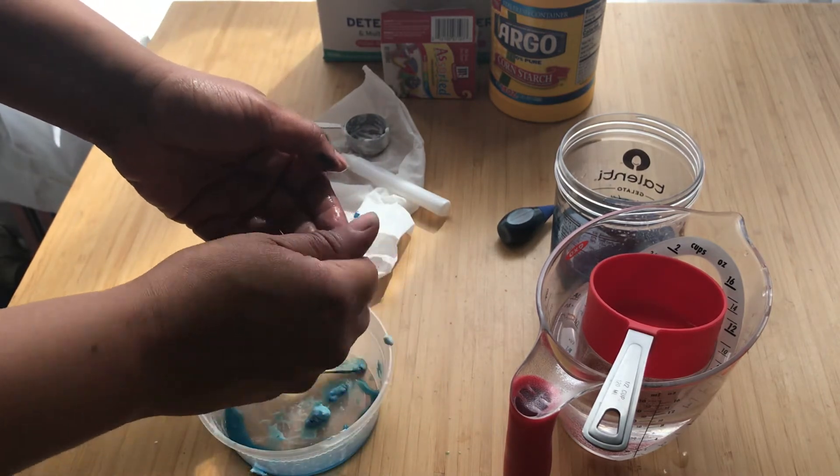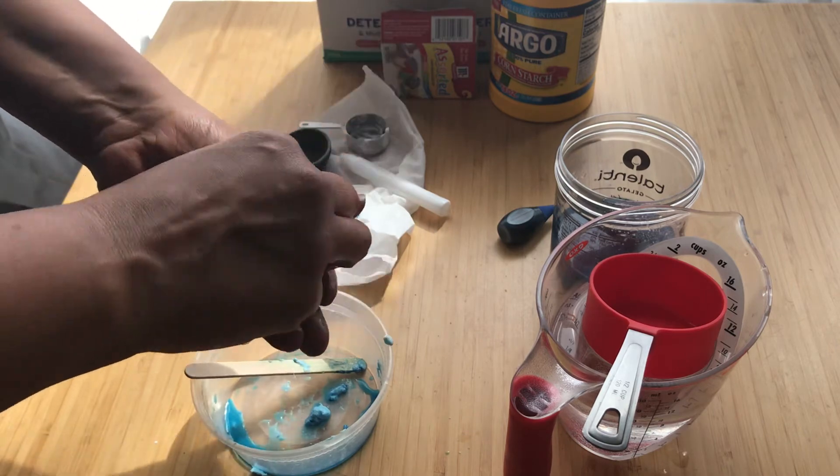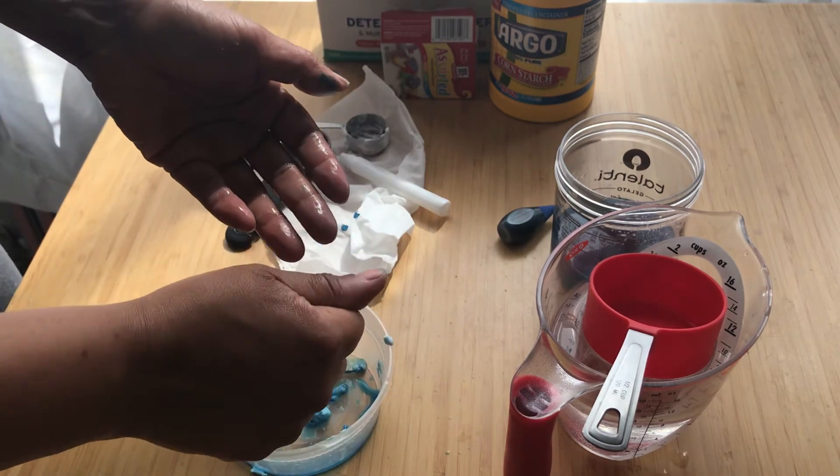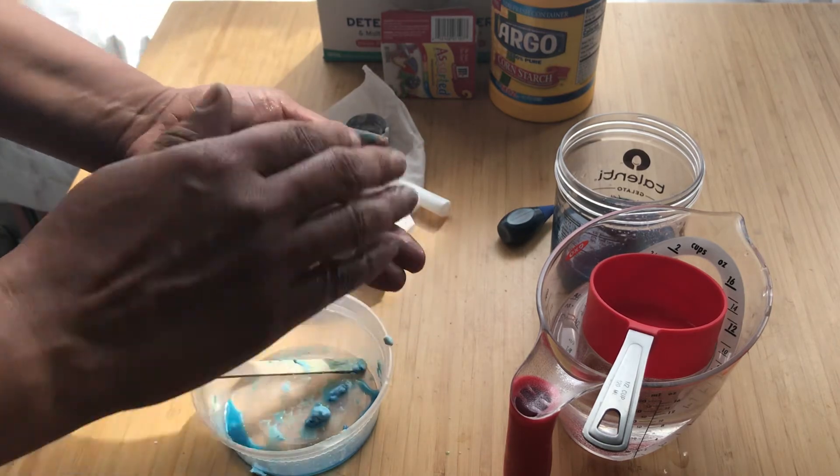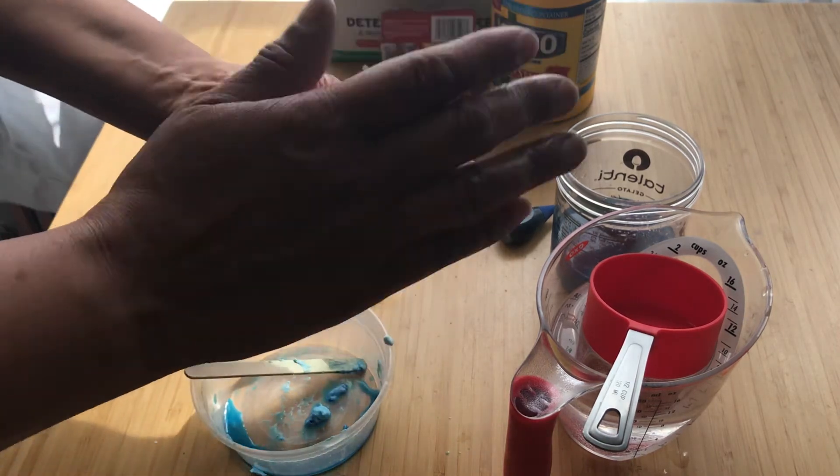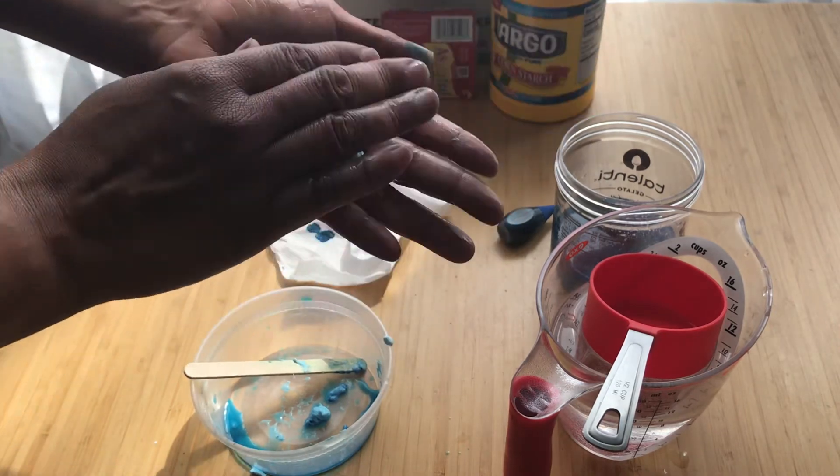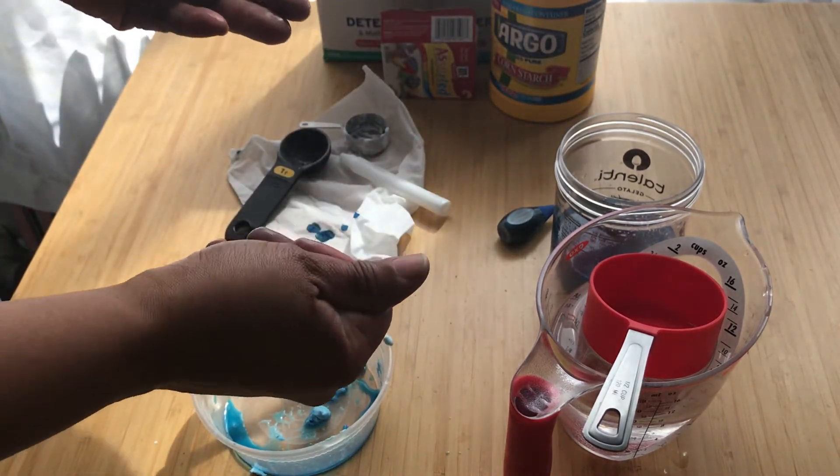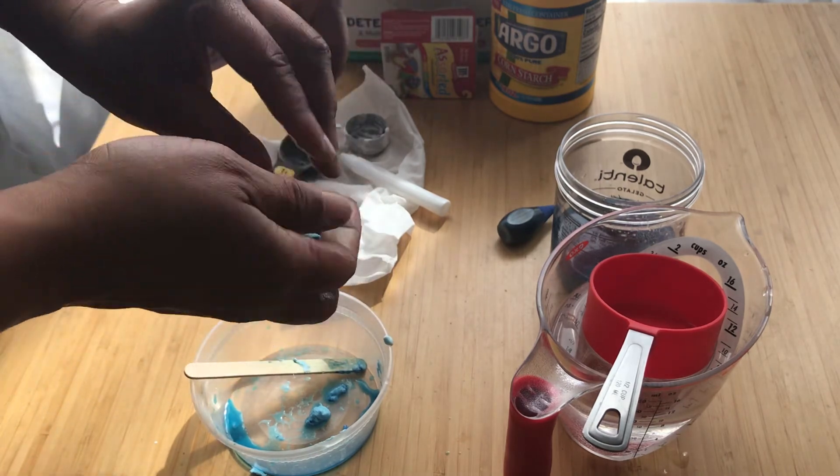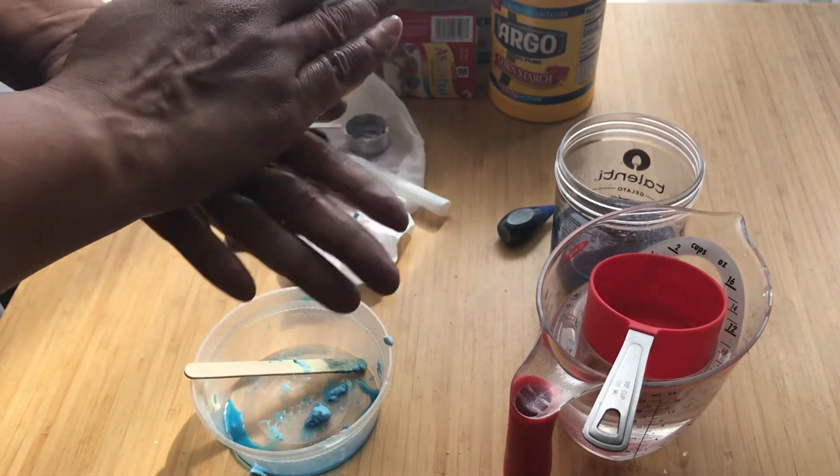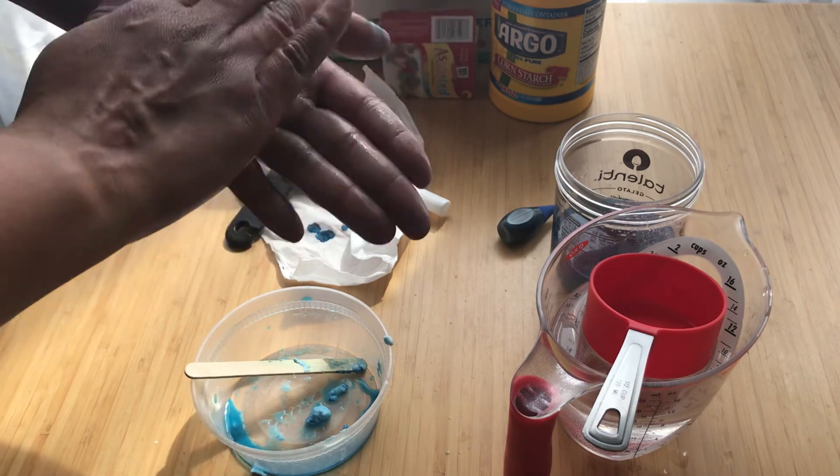So then, once you can put it on a paper towel, maybe squeeze out the excess. Once it's in a texture you can work with, now you can shape it into your ball. And it's going to be important for this to be able to dry to give it its bouncy ball consistency.